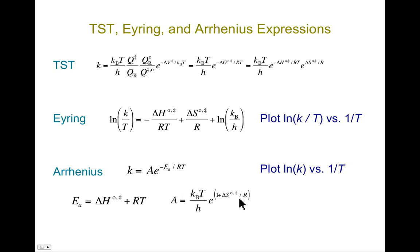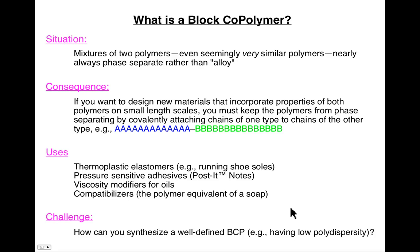And the Arrhenius prefactor has hidden within it the entropy of activation as well. So, these are related to one another, but it's really quite important when interpreting literature data to be quite certain what was plotted, what was extracted, to be sure you don't, say, compare inappropriate quantities from transition state theory to, say, Arrhenius theory. So, be careful making comparisons.